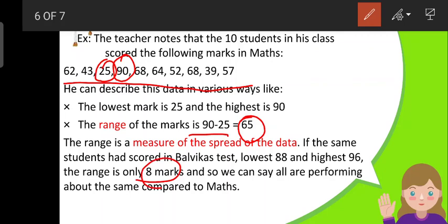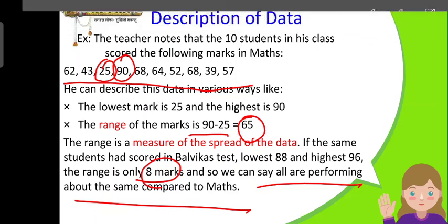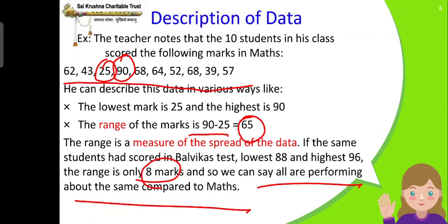Wherever the range is very less, we can say that all are performing about the same. Where the range is more, which means that there is a student who scores very less marks and there is a student who scores very high marks. If the range is very small number, then we can say that almost all are performing about the same.